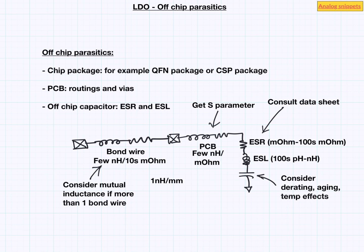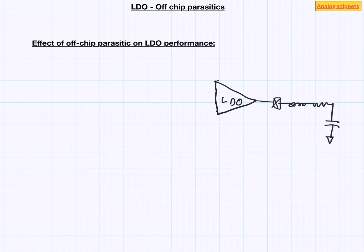Having considered the model, now let us turn our attention to the effect of this parasitic on LDO performance. To simplify our analysis, we will combine all the inductance into one inductor component and all the resistances into one resistor component. To complete our model, we need to add another component here and that is on-chip capacitor. This on-chip capacitor will itself have some ESR and ESL but we will ignore it for our analysis. Also we will assume that this capacitor is of the order of tens of picofarads.